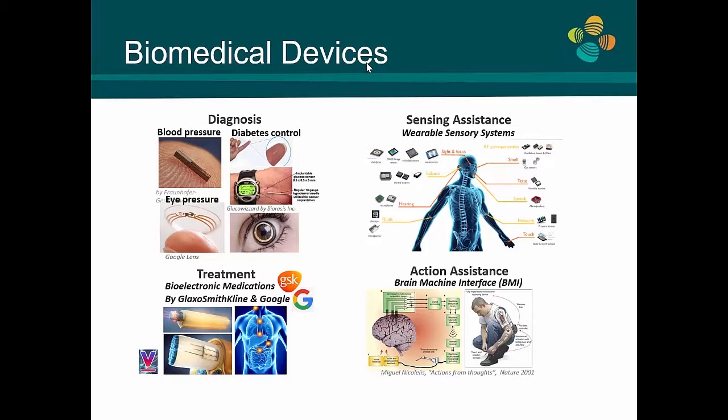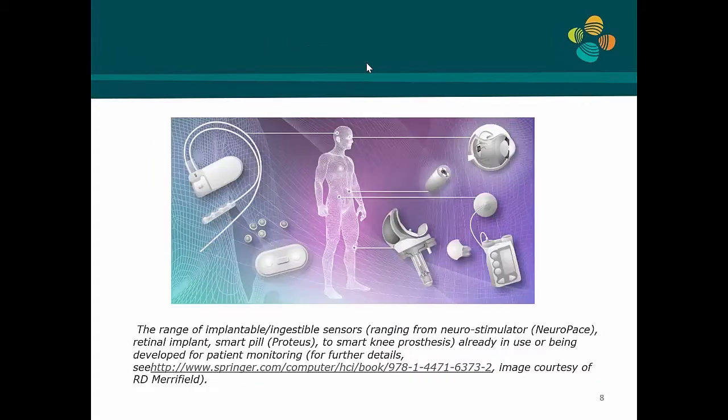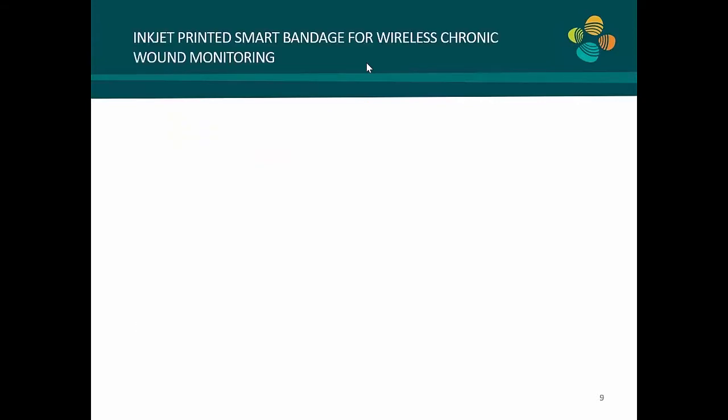We heard a wonderful talk today about prosthetics and brain-machine interfaces — sensors you can put into prostheses to give the feeling of touch, making it a two-way communication. More and more companies are getting interested in this field. Companies like GlaxoSmithKline and Google made a joint company called Verily, investing about half a billion dollars into technologies to bring electronics and advances in the electronic industry into the medical field.